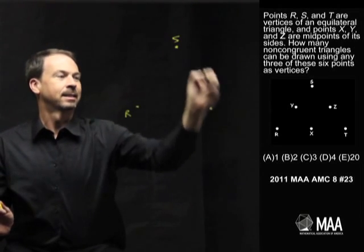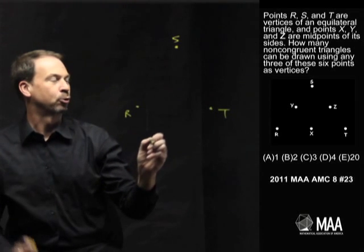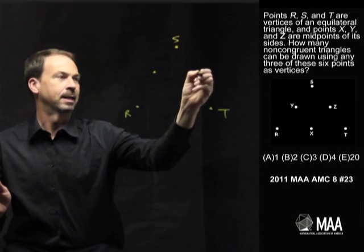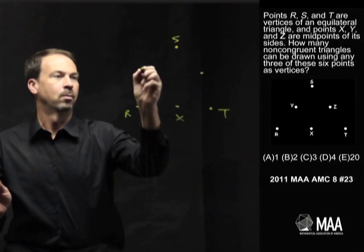So we have R, S, T being the vertices of an equilateral triangle, and X, Y, Z on the sides.